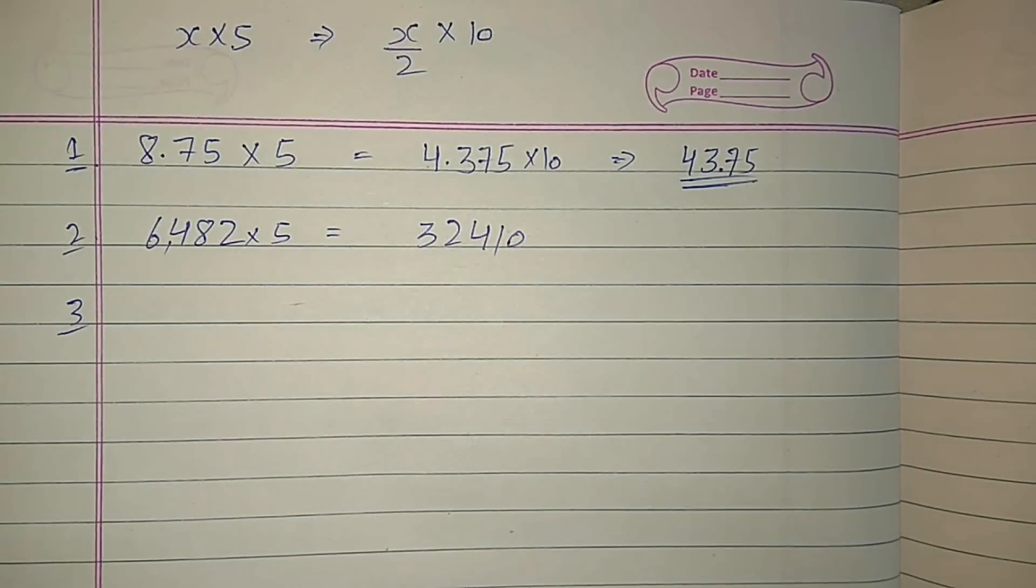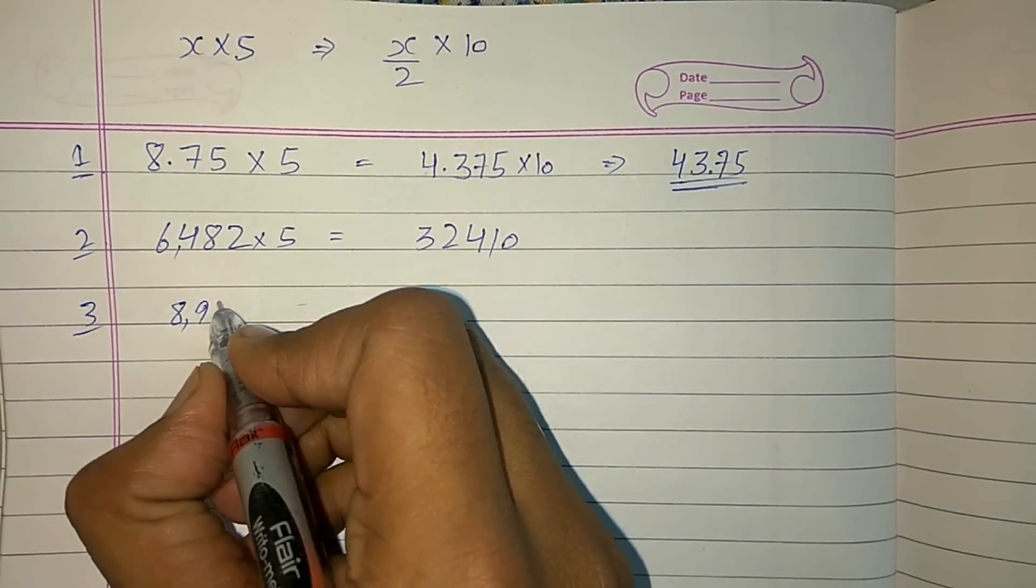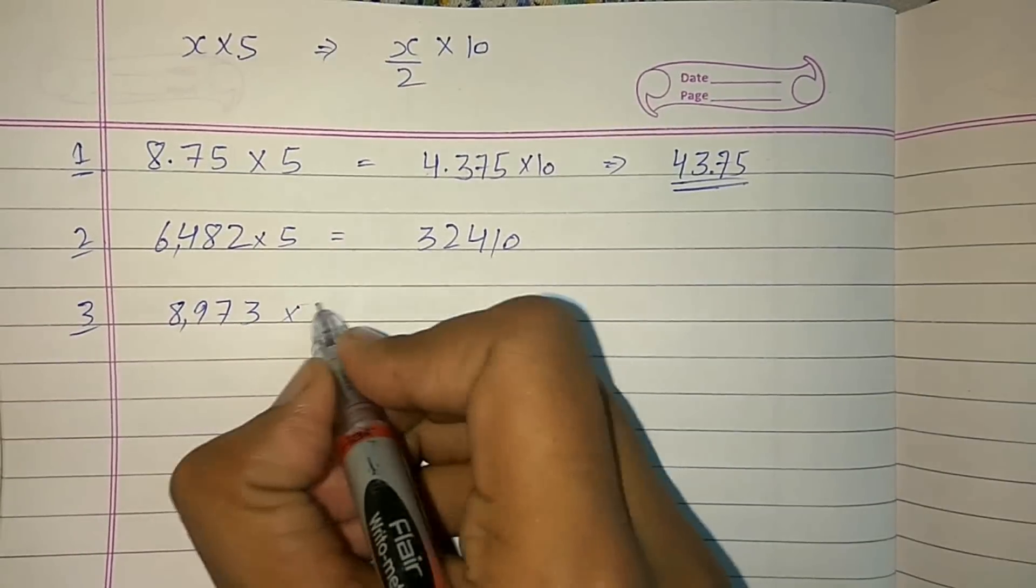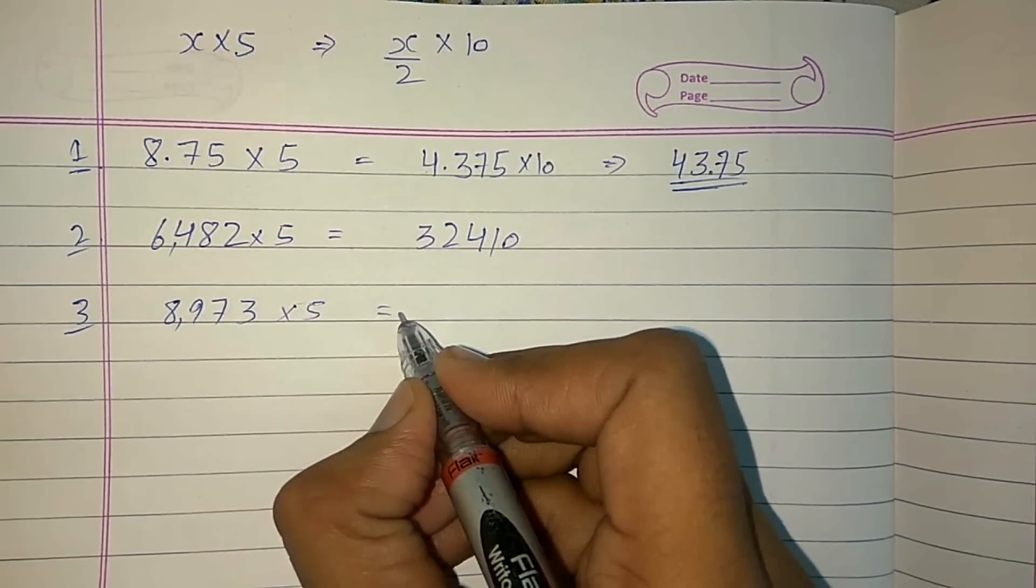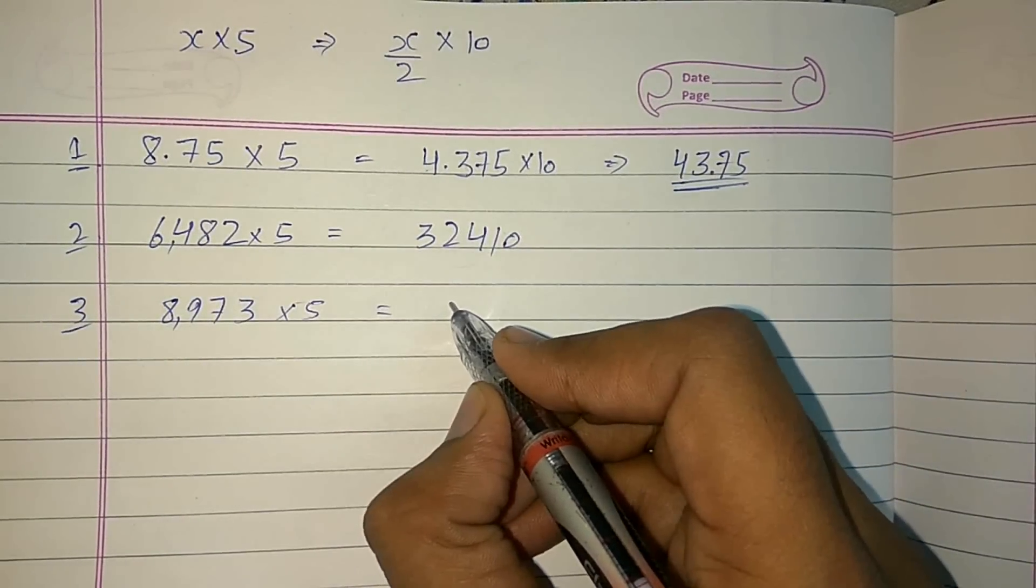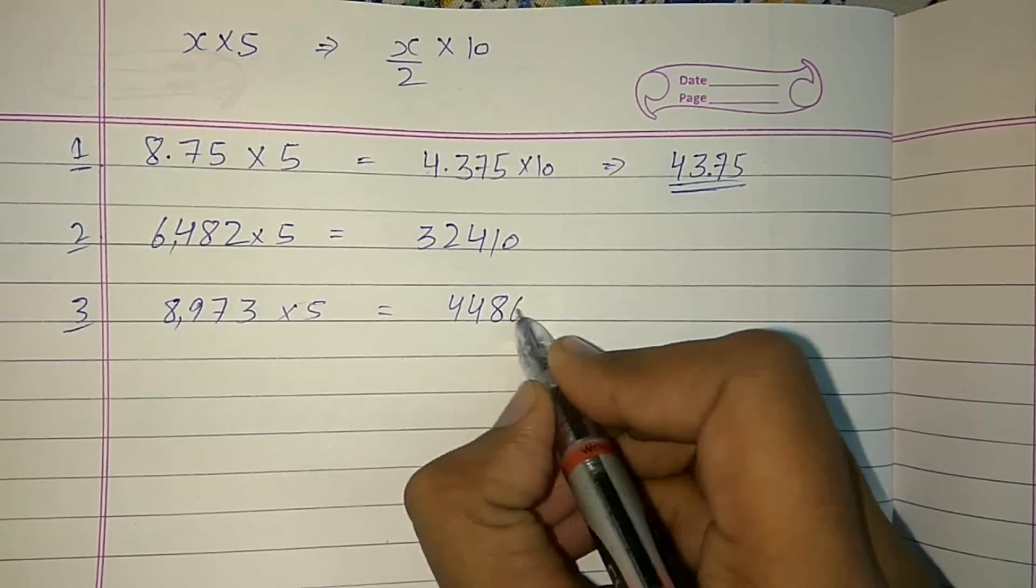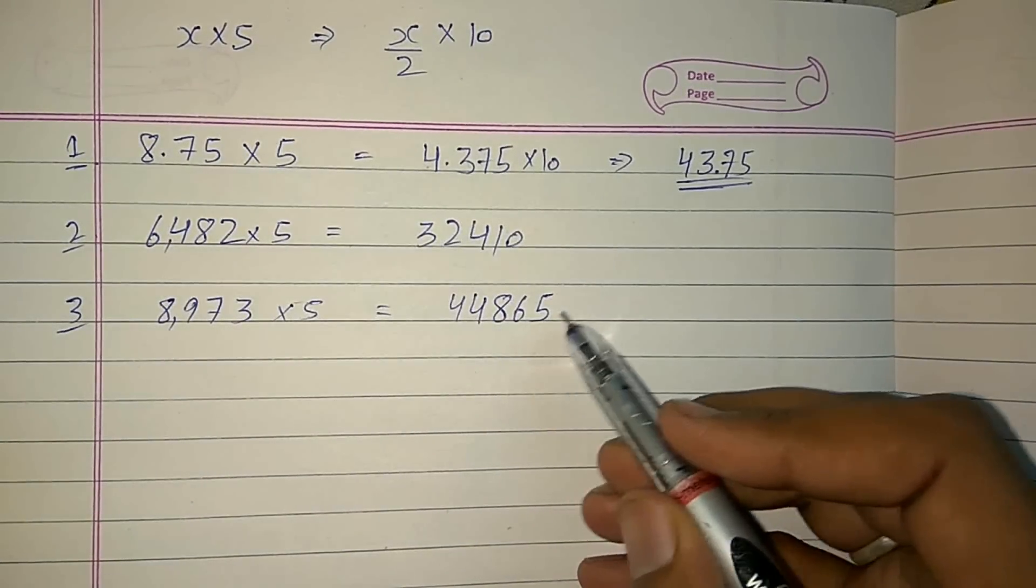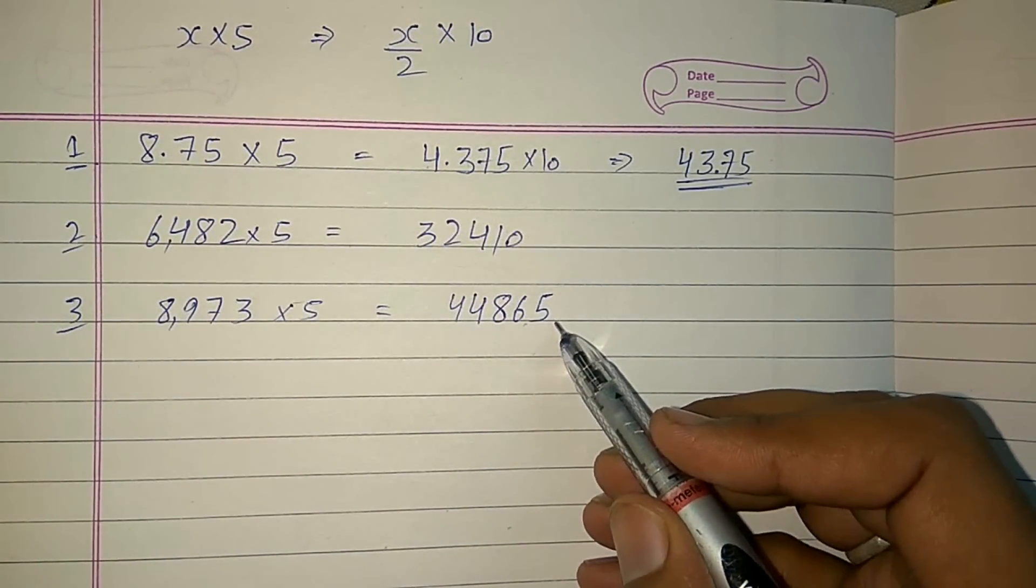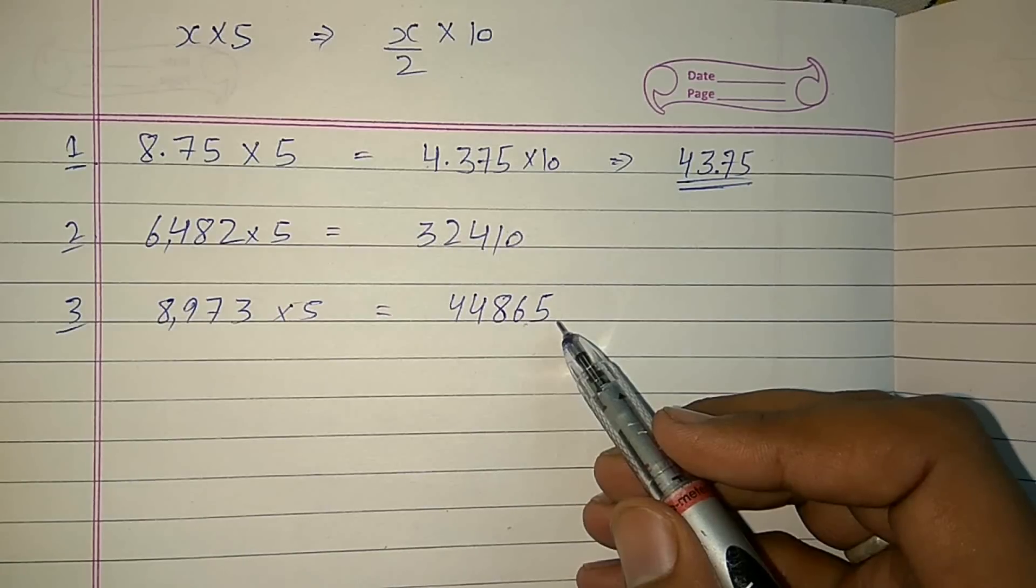Let's take another example. We will take an odd number this time: 8973 to be multiplied by 5. Let's check out the result in less than 3 seconds. It will be 4486.5. When you multiply by 10, the decimal point will be shifted, so it's not written separately.